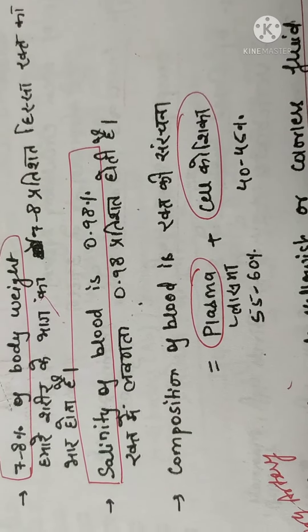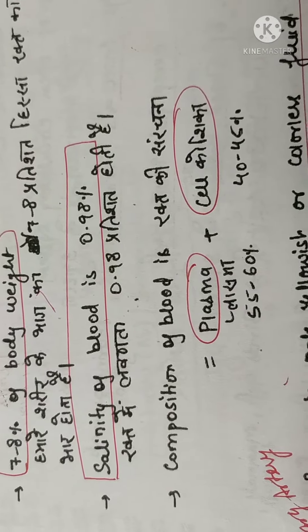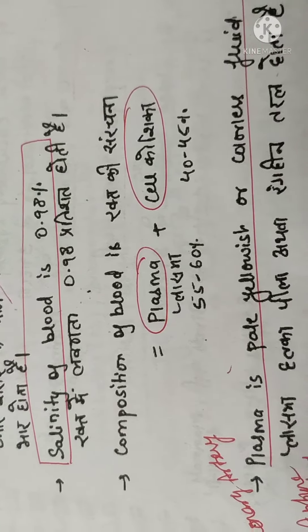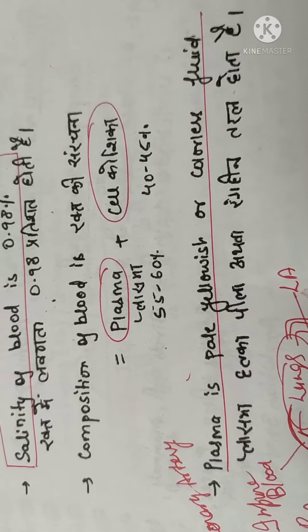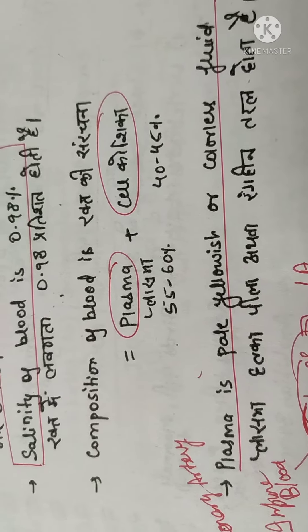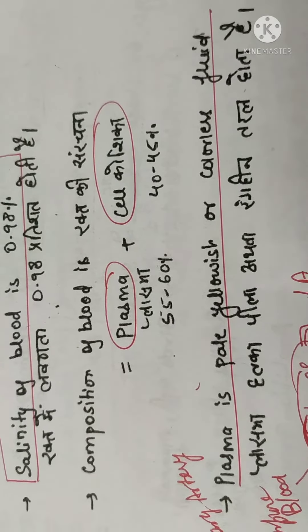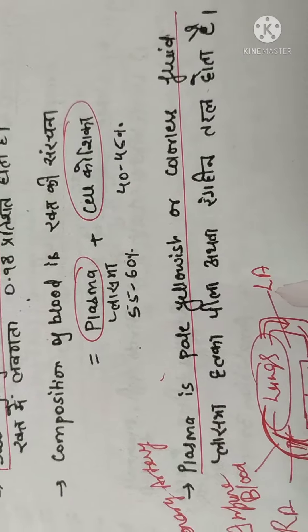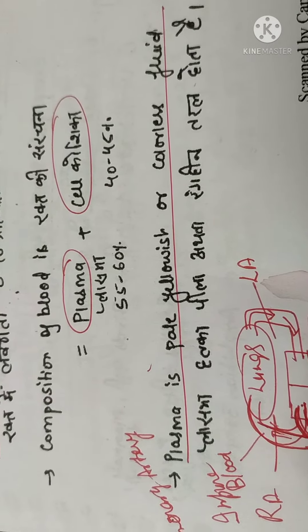Composition of the blood is 55 to 60 percent plasma and 40 to 45 percent cells.